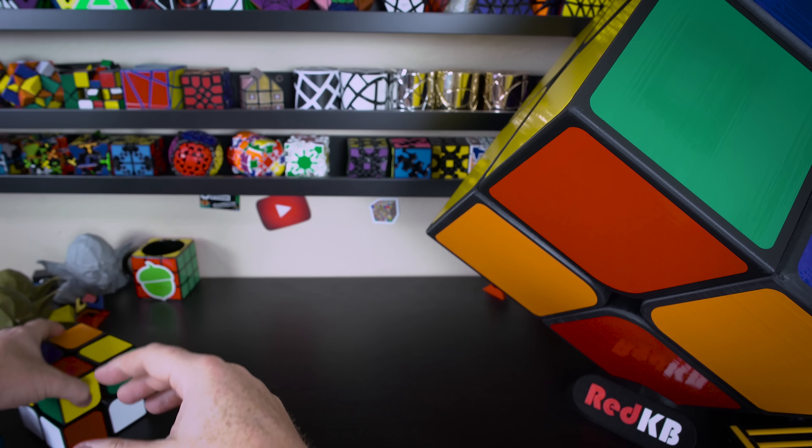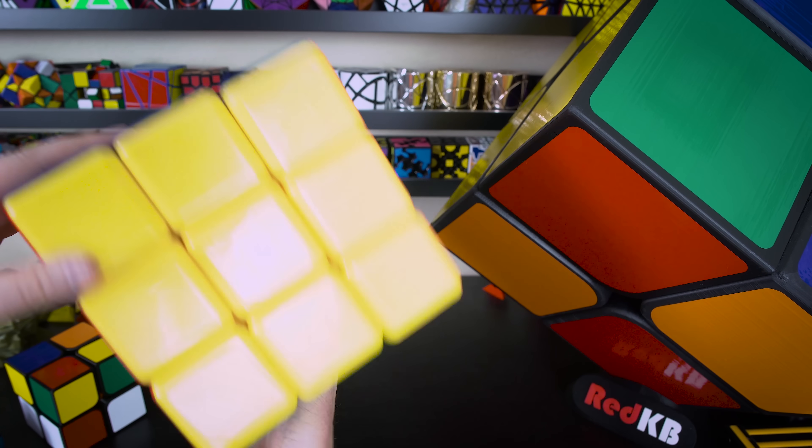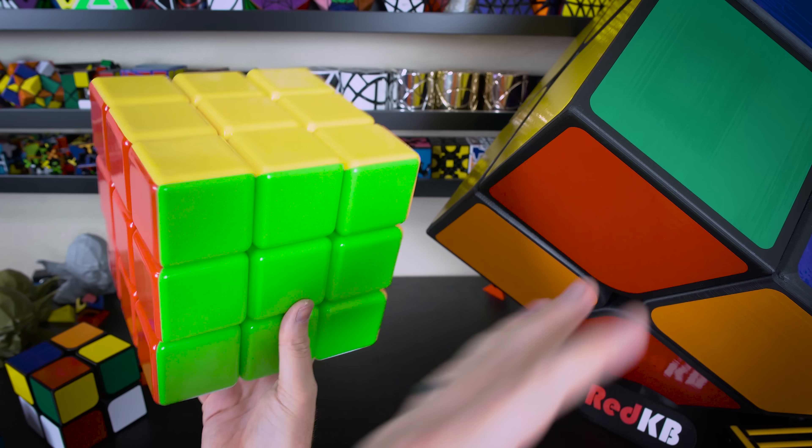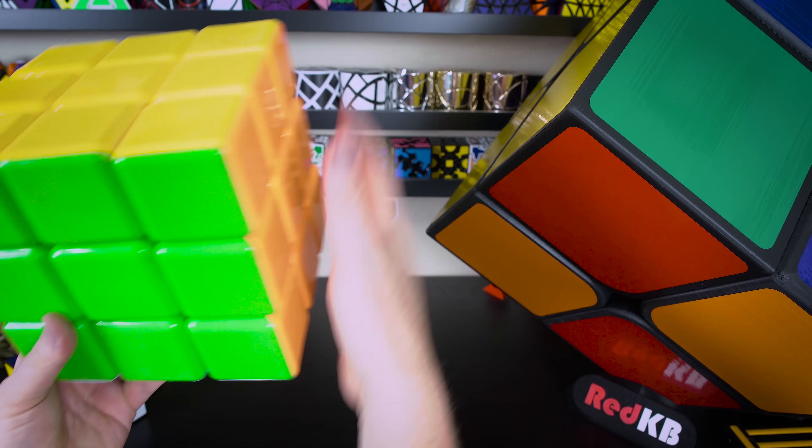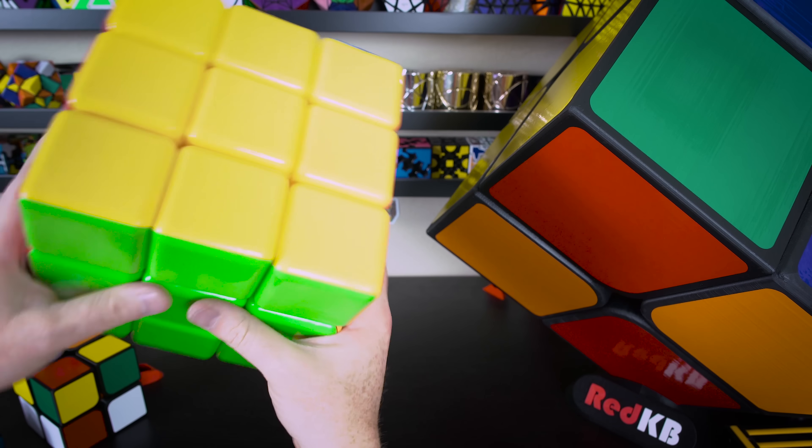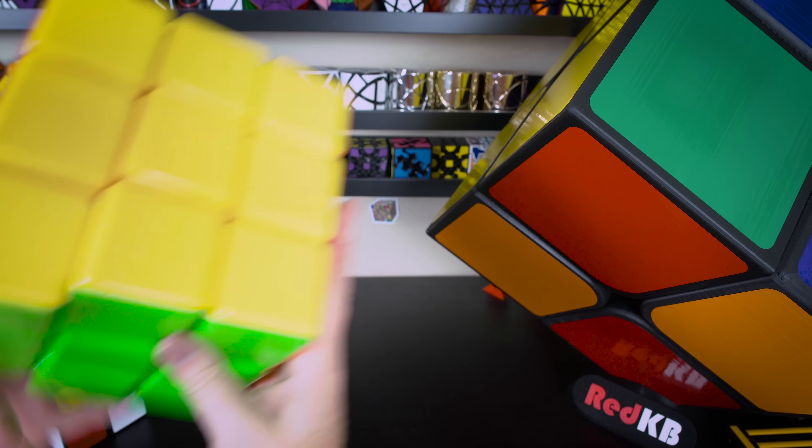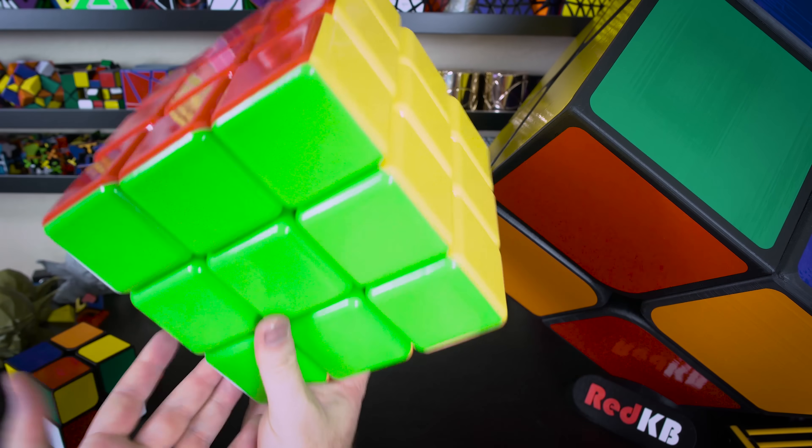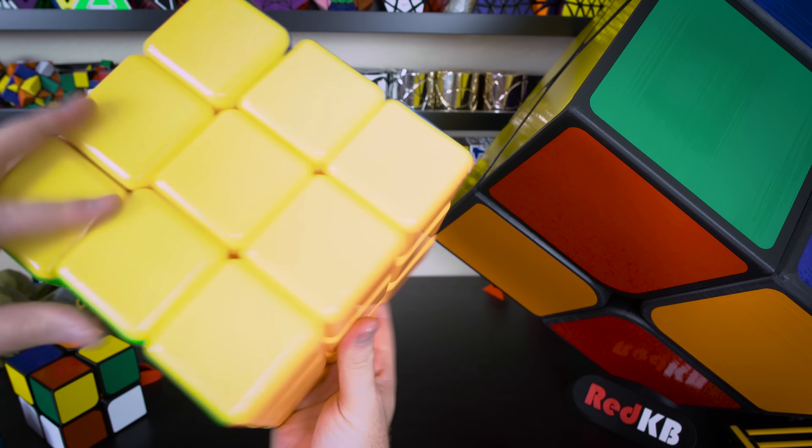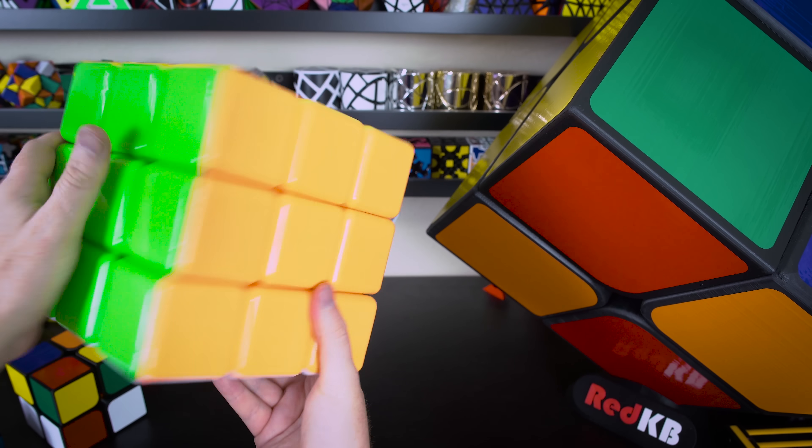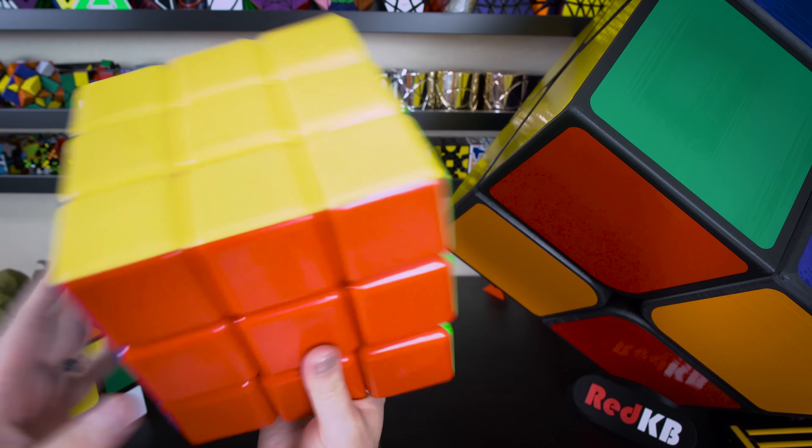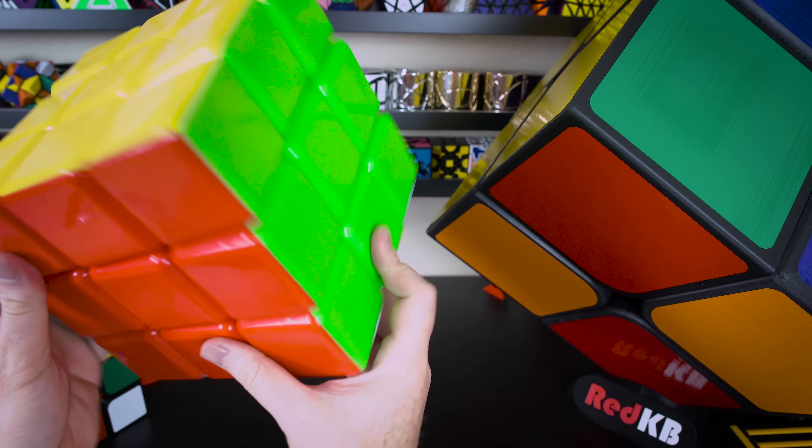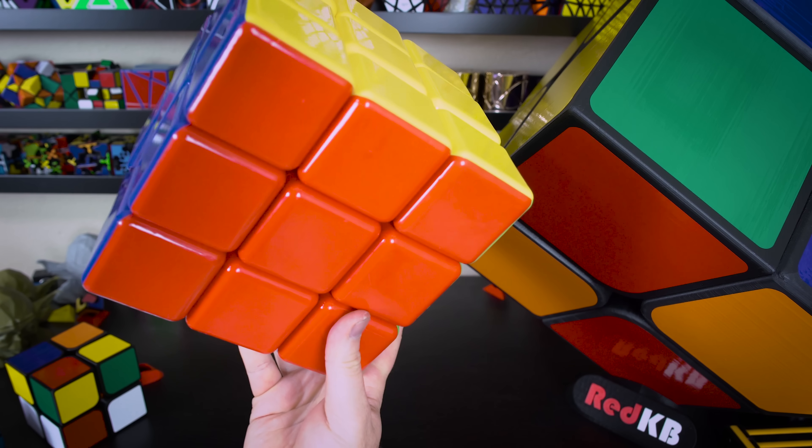So I use this giant 3x3 as the core for my huge 2x2. Each cubie, each corner cubie, is the actual same size of this cube. This cube here is 18 centimeters, so each of the cubies are 18 centimeters, so the entire cube is 36 centimeters. That's the world's largest 2x2. The previous largest was by Tony Fisher and I'll put a link to that in the description.